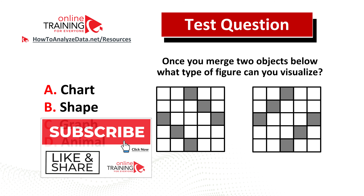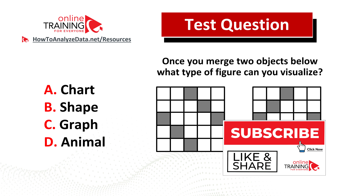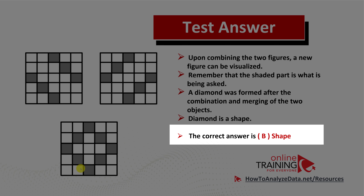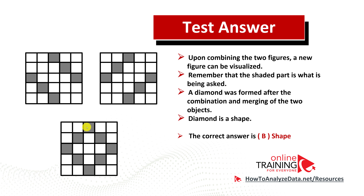Did you figure out the solution? As part of a visualization exercise, you need to merge all the shaded dots. For example, a dot here is missing; when you add it, the picture starts to emerge. You add another dot here and another missing dot here. Upon combining and merging all the items, you see that a diamond is formed. The correct answer is choice B, the shape, because a diamond is a shape.